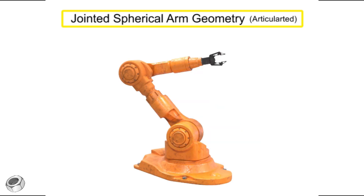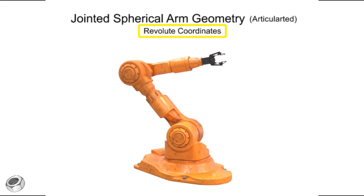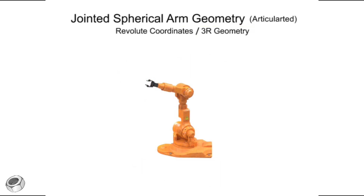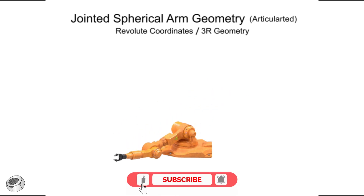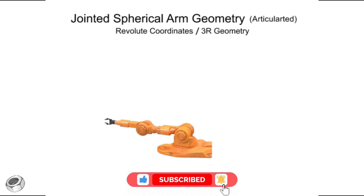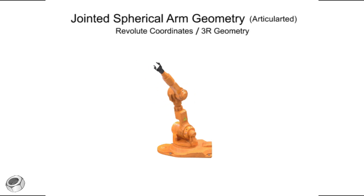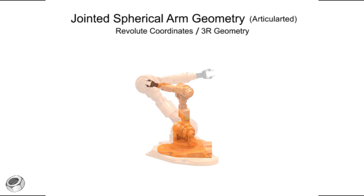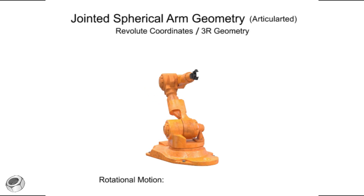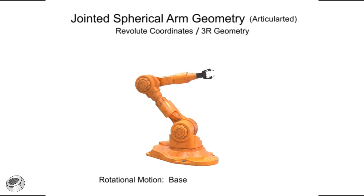Jointed spherical arm geometry robots have rotation in three directions, use revolute coordinates, and are given the designation of 3R. They are one of the most popular types of robotic arms and most accurately mimic the movement of the human arm. Robotic arms with jointed spherical or articulated geometry rotate on at least three axes. Left and right movements are provided by rotation at the base, horizontal movement is provided by rotation at the shoulder, and vertical movement is provided by rotation at the elbow.